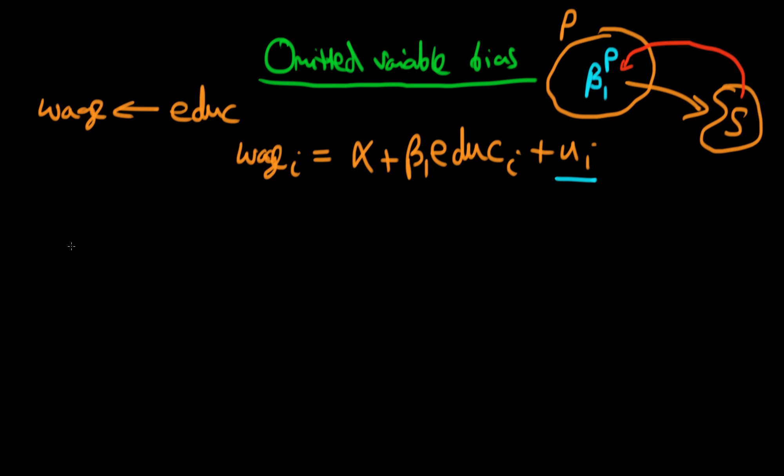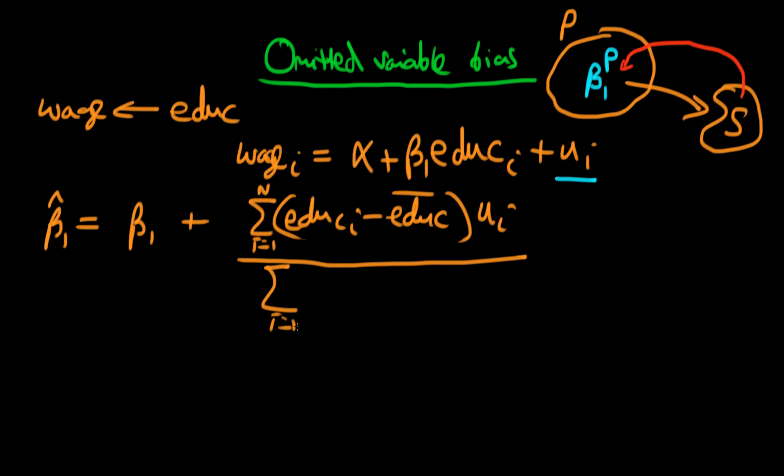beta_1p, we get that beta_1_hat is equal to beta_1 plus the sum from i equals 1 to n of (educ_i minus educ_bar) times u_i, divided by the sum from i equals 1 to n of (educ_i minus educ_bar) squared. We've derived that previously in other examples.